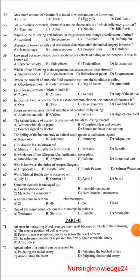Which organism causes peptic ulcer? Options: Streptococcus, Cronybacterium, Helicobacter pylori, or Streptococcus. The answer is c) Helicobacter pylori.